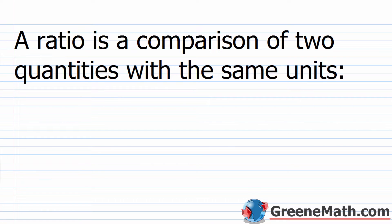We'll start with some basic definitions. A ratio is a comparison of two quantities with the same units. Later on we'll talk about rates — a rate is basically a special ratio where the units are going to be different. Ratios are something we're going to use a lot moving forward, and they're actually something that will help you in your everyday life.